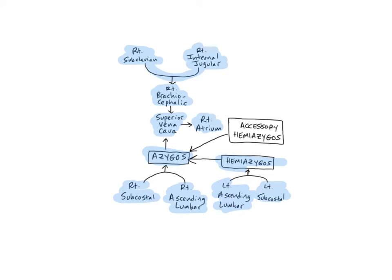The final major vein of the azygous system is the accessory hemi-azygous vein. It's also unpaired and located anterior to the vertebral column and to the left of the midline, like the hemi-azygous. It originates at the fourth or fifth intercostal space between the ribs and then descends along the thoracic vertebrae to empty into the azygous vein in the area of the eighth thoracic vertebra. It drains blood from the left side of the upper thoracic wall and thoracic vertebrae.